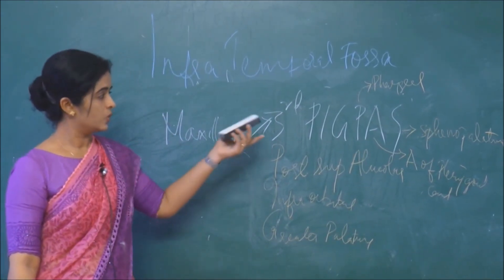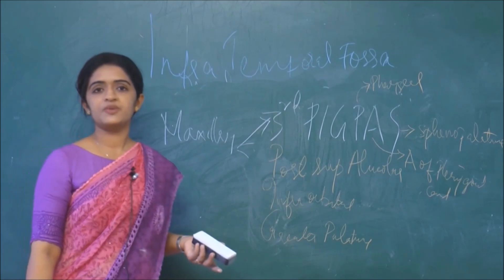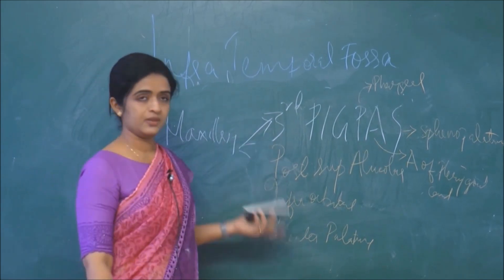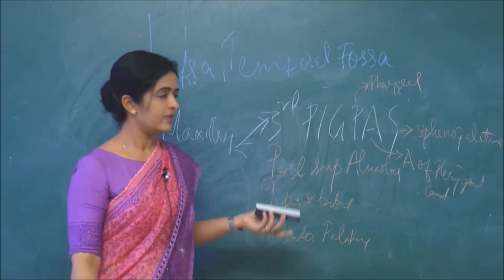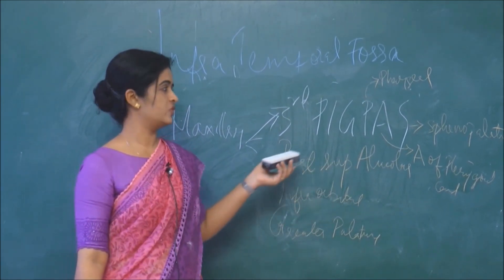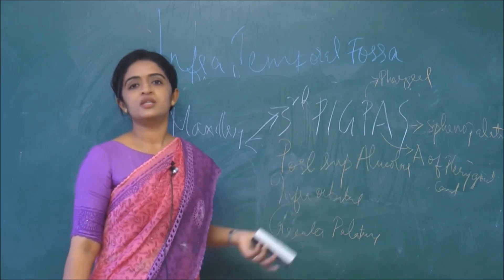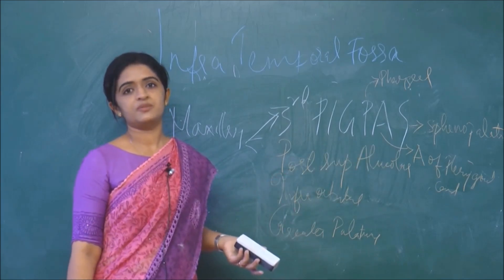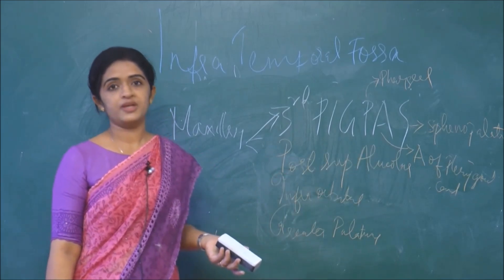Though you won't be seeing these branches in the infratemporal fossa directly, when you write about it, it will look good if you can mention the branches arising from the third part of the maxillary artery.